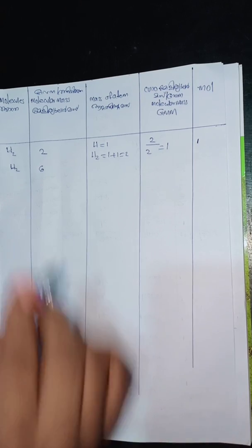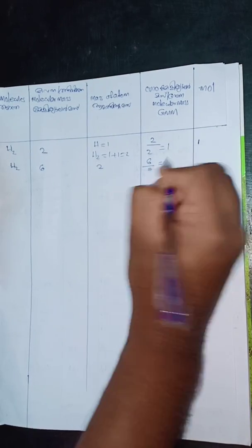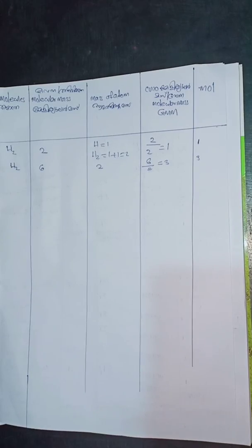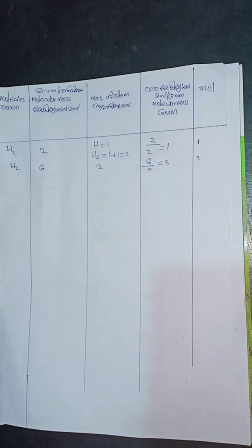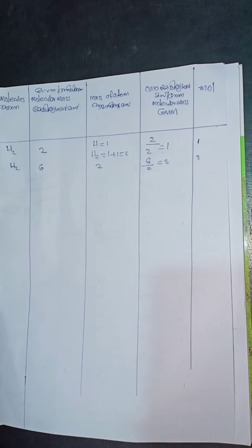It is a gram molecular mass — we call it GM. 6 divided by 2 is equal to 3. Let's go to the example: Oxygen.